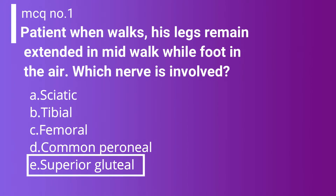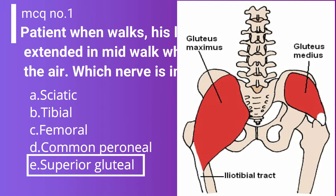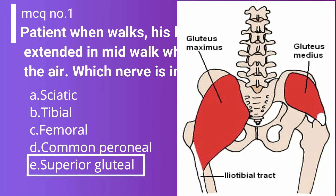The correct answer is superior gluteal nerve, because it supplies the gluteus medius, minimus, and tensor fasciae latae. Due to this nerve injury, the patient is unable to lift the pelvis and the normal side begins sagging. This lesion causes Trendelenburg's sign. The superior gluteal nerve has nerve fibers from L4, L5, and S1, and exits through the greater sciatic foramen.